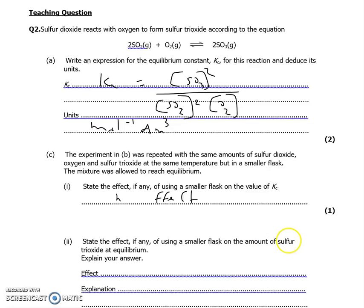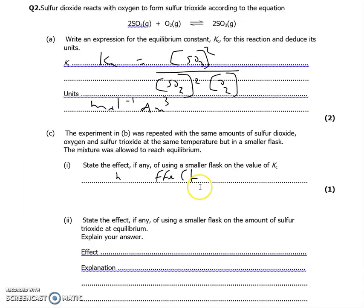And then it says part two. State the effect, if any, on using a smaller flask on the amount of sulfur trioxide at equilibrium. Now we can invoke Le Chatelier's principle, and we can say, we've got three gaseous moles on the left-hand side, two gaseous moles on the right-hand side. The equilibrium will shift to the side with the fewest moles of gas, so that will be the right-hand side. So, the effect will be to increase the amount of sulfur trioxide, and the explanation is because there are fewer moles of gas on the right-hand side, the equilibrium shifts to minimize the change applied.